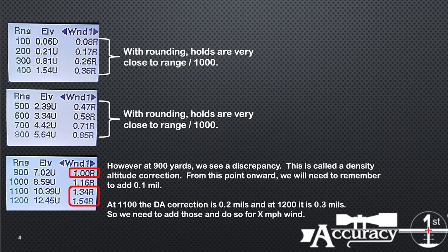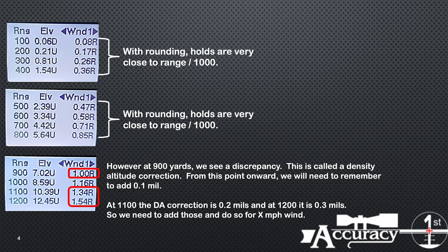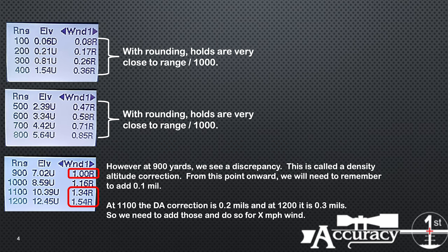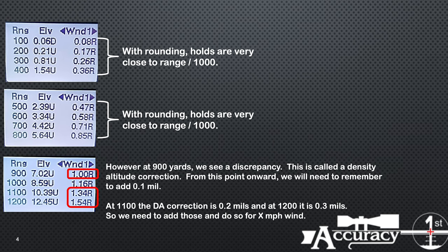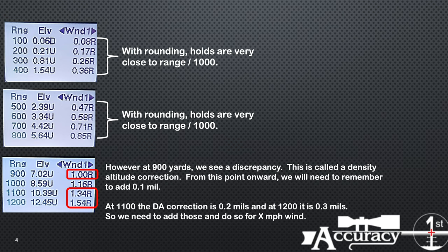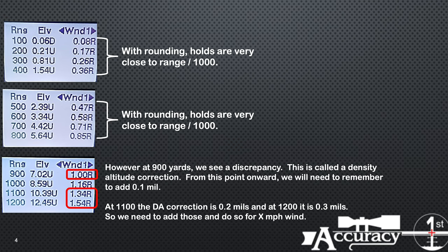Scroll until you see the range that does not match your wind call. It depends on density altitude, the gun you're running, muzzle velocity, BC, and other factors. It's calibrated at 500 meters, so you should see 500 = 0.5 mils, very close at least. Then 600 probably shows 0.6, but 700 may show 0.8 — meaning at 700 meters you get 0.8 mils every X mph.